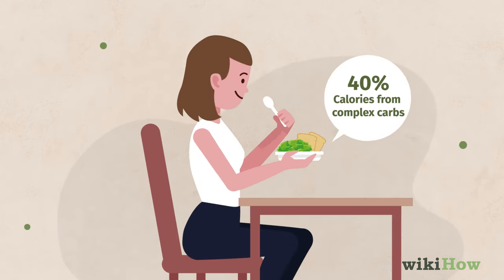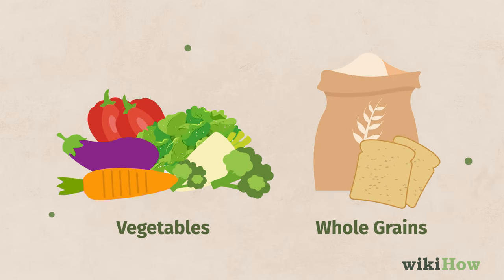Get 40% of your calories from complex carbs like vegetables and whole grains. Your body needs carbs to fuel your workouts.